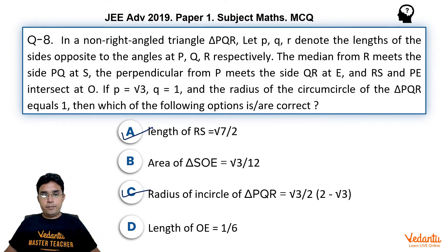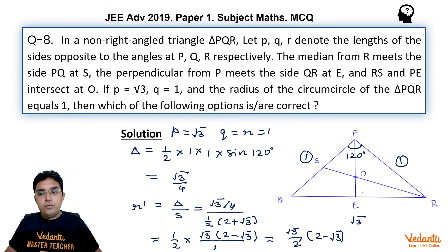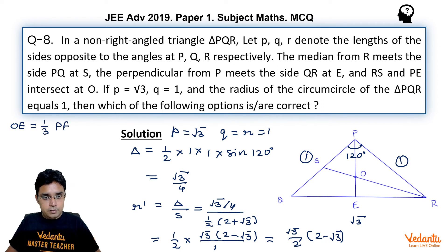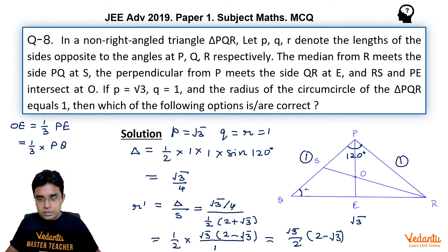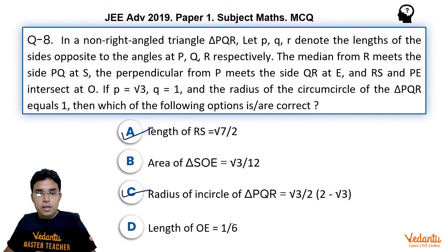For length OE: since O is the centroid, OE is one-third of the median length PE. We find PE = PQ · sin 30° = 1 · (1/2) = 1/2. Therefore OE = (1/3)(1/2) = 1/6. This matches the given option, confirming OE = 1/6 is correct.